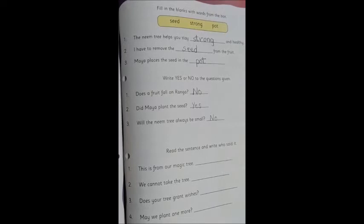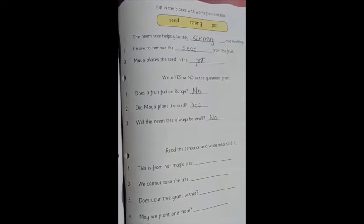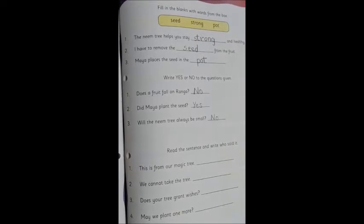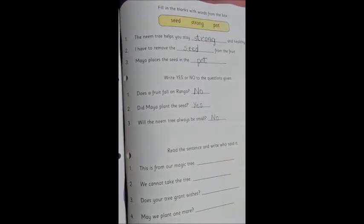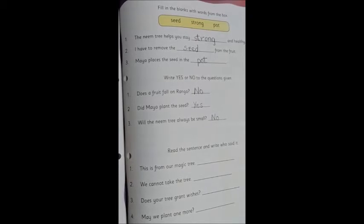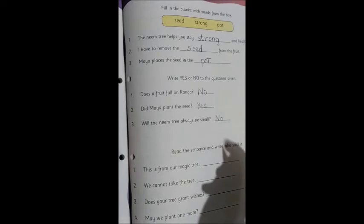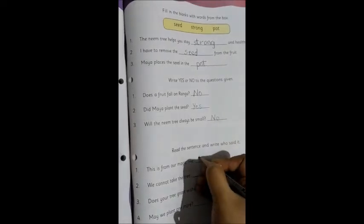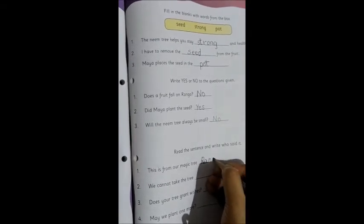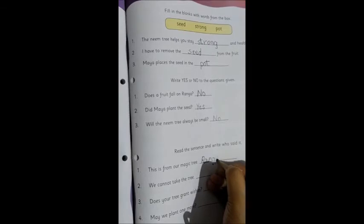Now moving on to the last segment. Read the sentences and write who said it. We will have to tell from the story who said this sentence. This is from a magic tree. Who said this? Ranga. So we will write the spelling Ranga. R, name of a person, so it will be capital Ranga. R-A-N-G-A. Ranga.